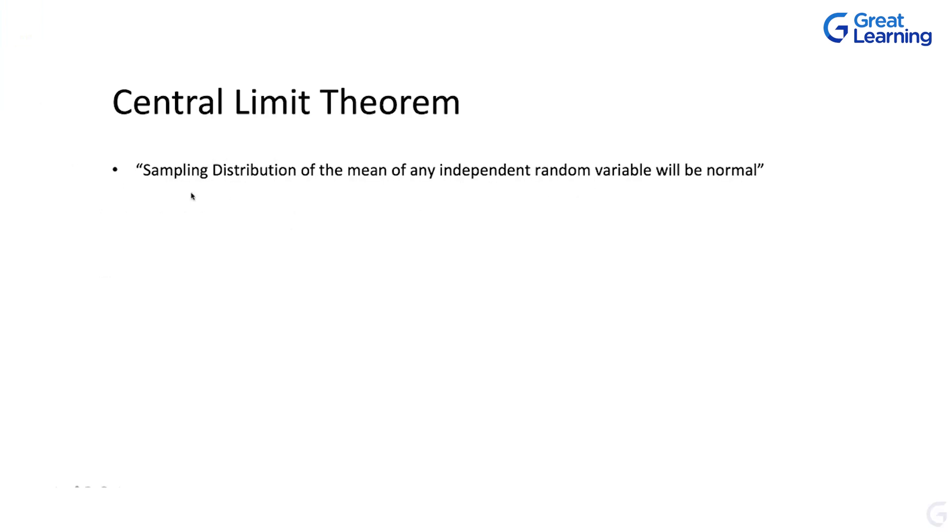Central limit theorem. Sampling distribution of the mean of any independent random variable will be normal. Independent random variable could be any metric that we calculated. Flavor of a fruit juice or likability of a new phone launched into the market or likability of a software product that is launched into the market. You can talk about anything or usability of the software product. You can take anything. It's an independent random variable.